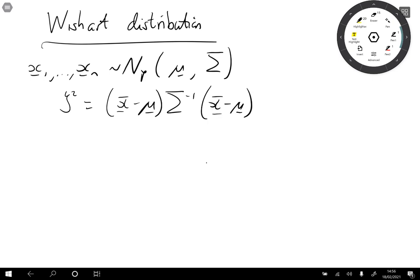And if we know sigma, then we know that this has a chi squared P distribution. That allows us to do a hypothesis test of the form H0 mu equals some value versus the alternative.